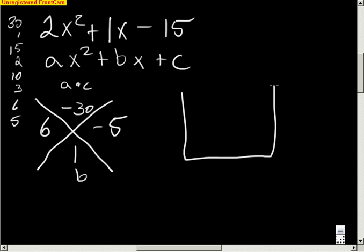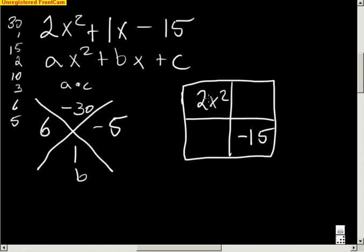Now what I do is I build my rectangle. When I build my rectangle, I know that this term right here is going to go into this box right here. It's going to have a 2x squared here. And that this term here automatically goes in the bottom. Now what I do is I take these newfound terms here and I can put them in either one of these boxes. It doesn't matter at this point. So I put a 6x here and a negative 5x here.